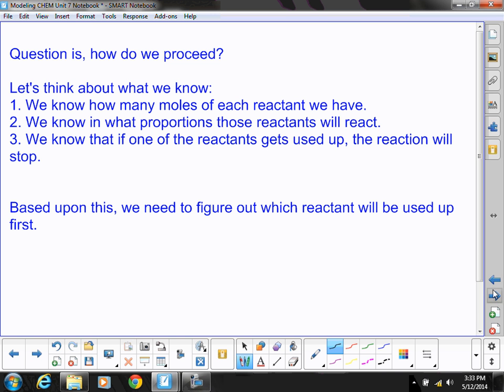And then three, we know that if one of the reactants gets used up, the reaction will stop. We've talked about that in the past. In order for the reaction to proceed, we have to have the proper amounts of each reactant. And if one of them gets used up, so it's no longer present, then there is no more chemical reaction. So based upon that, we need to figure out which of the reactants is going to be used up first.